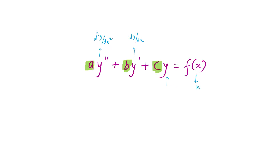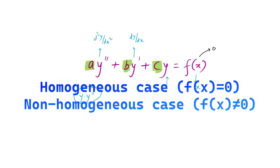The constants a, b, and c are constants and f(x) is a function of x. The equation is said to be linear in y because y, y', and y'' each appear to the first power with no products between them. If f(x) equals zero it is called homogeneous; if f(x) is not equal to zero it is called non-homogeneous.